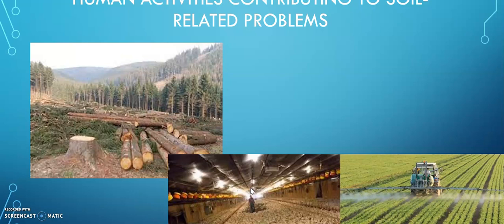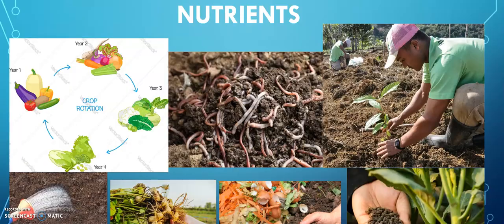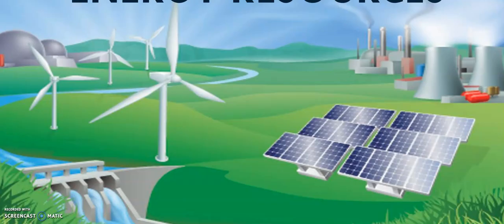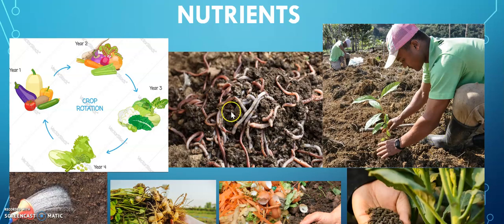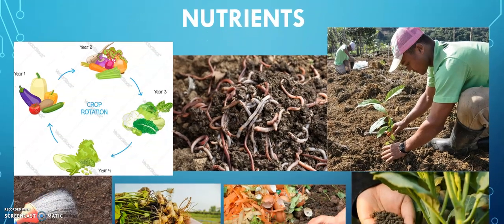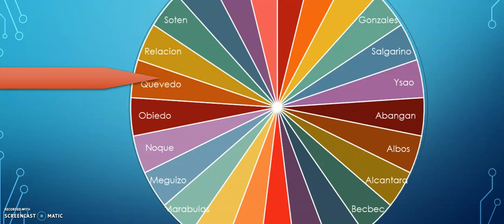What are the ways to protect and conserve soil nutrients? Before proceeding, can you tell what problems are shown here? Illegal logging leads to flooding. I'm going to ask the students to enumerate what these pictures are about — they are the ways to conserve soil nutrients. They have to identify them using the wheel of names.